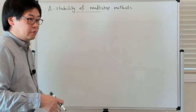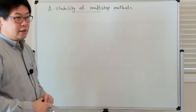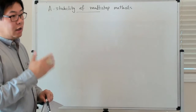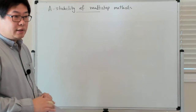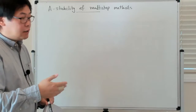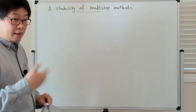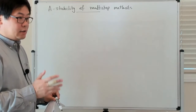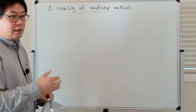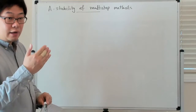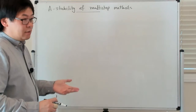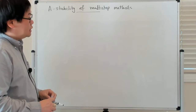In the case of a one-step method, all you're basically saying is that when you apply the method to the model problem with the given initial data, if the model problem has a decaying solution, then you want your one-step method to have a decaying solution as well. But now, because the multi-step method also depends on all of these initial values which go beyond just the value at time t0, what does it really mean for a multi-step method to be stable?